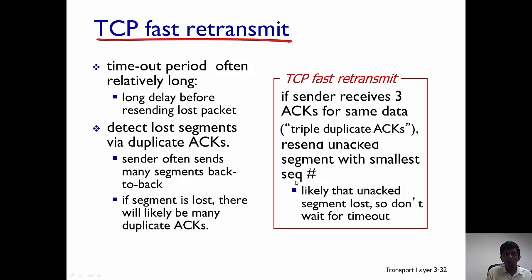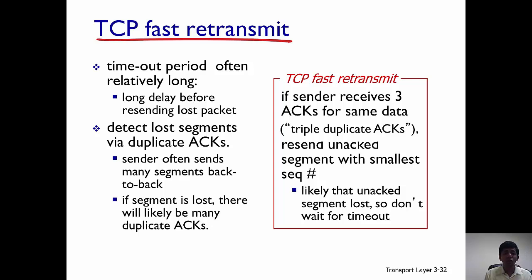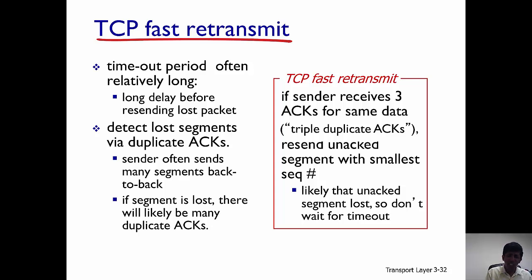We will conclude this discussion with fast retransmit. It's hard to calculate the timeout value for TCP, so sometimes a packet can be lost and the timeout period can be really long. Fast retransmit is used to detect lost segments via duplicate acknowledgements. If the sender receives three acknowledgements for the same data — triple duplicate acknowledgements — it re-sends the unacknowledged segment with the smallest sequence number, because it's likely that segment was lost and so it doesn't wait for timeout.